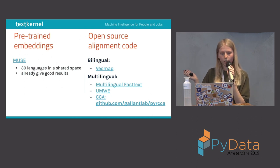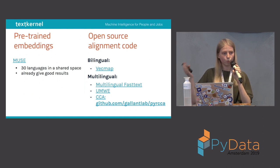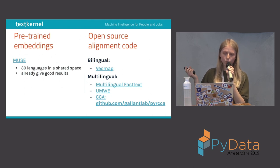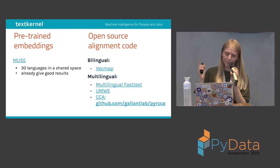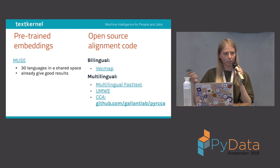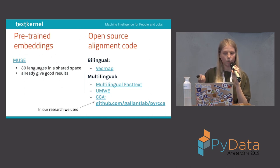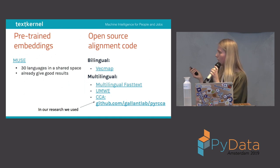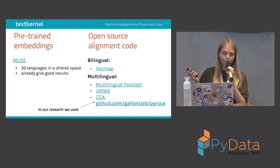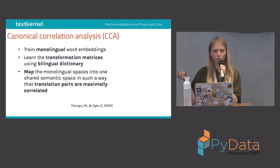There are different solutions available online. The first is a bilingual solution called VecMap, which maps two languages into a shared space. Then there are multilingual solutions like multilingual fastText, UMWE, or CCA, which map multiple languages to the same shared space. At TextKernel, for our research we use the CCA solution, and I'm going to explain in a second why we find this one good.